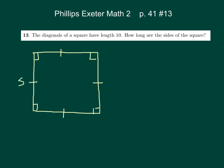given the diagonals of 10. One way we could do this is, since we know that both sides of the square here are S, we can use Pythagorean Theorem,